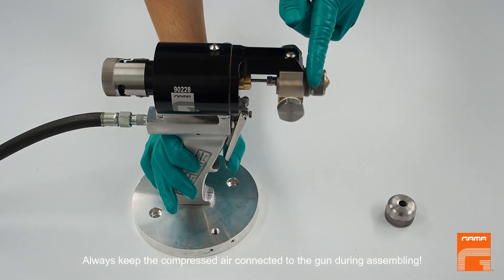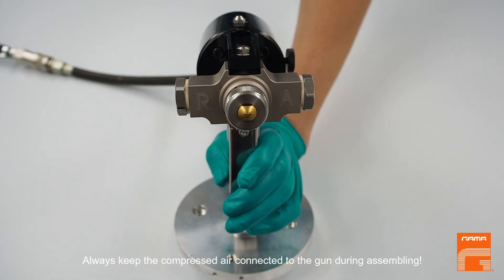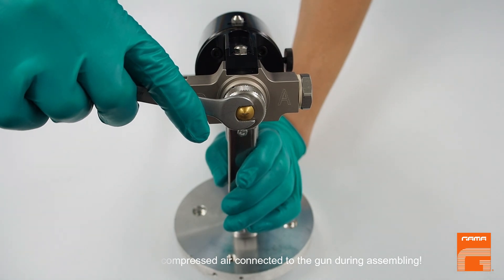Otherwise, you will get a leakage when working. Using compressed air, finish nozzle installation by turning the nozzle into a desired position.